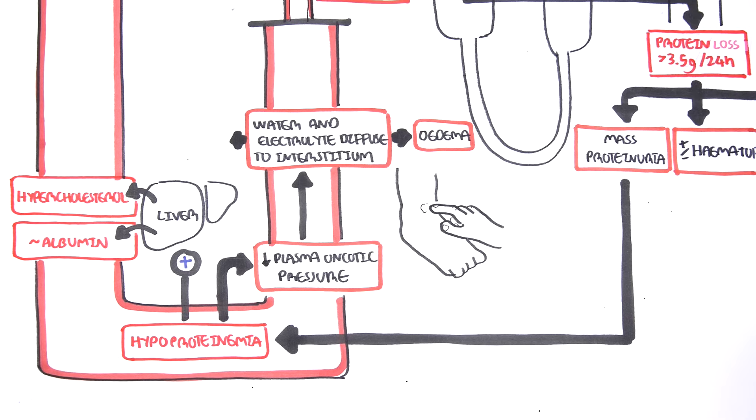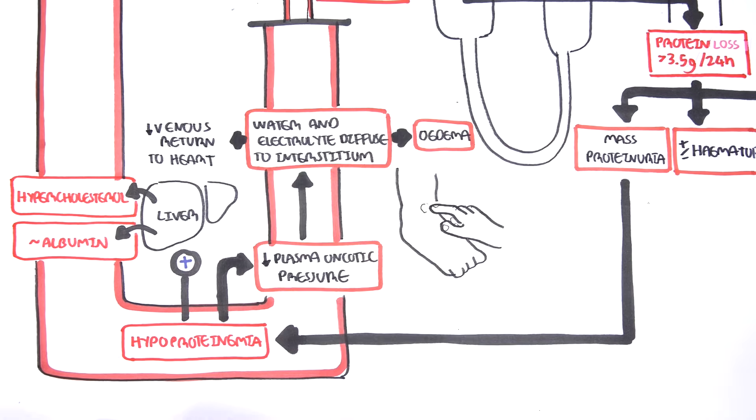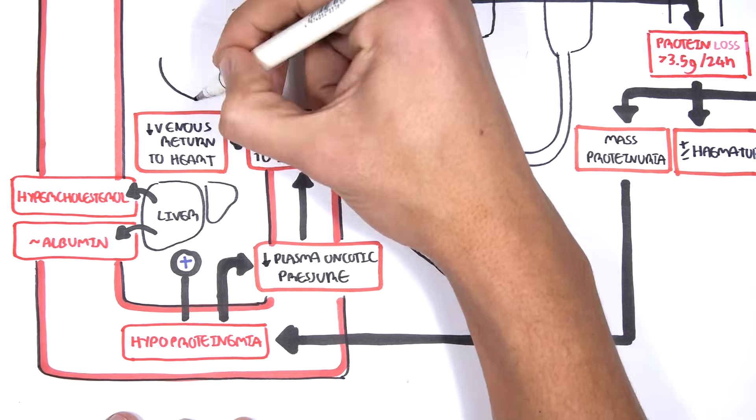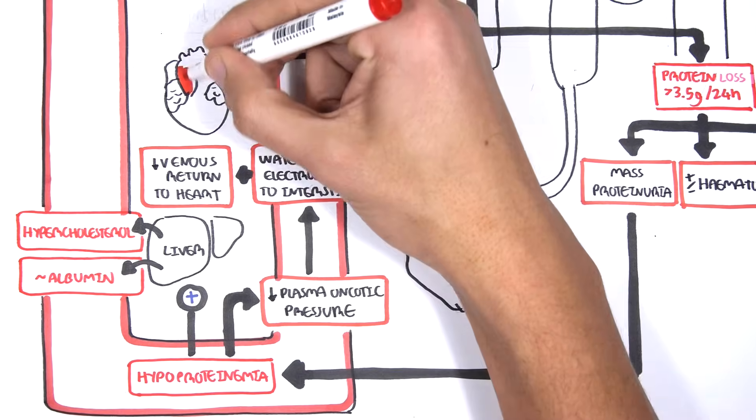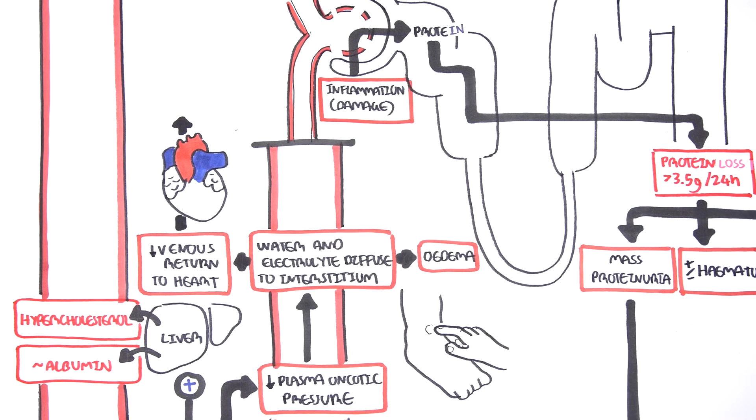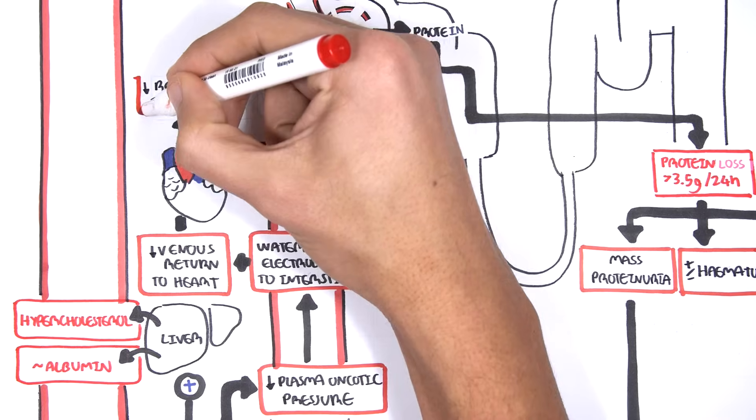The movement of water and electrolytes means there will be decreased volume in the vascular compartment and circulation. This decrease in volume means decreased venous return to the heart. With decreased blood volume returning to the heart, the heart will pump less volume to the rest of the body. This means there will be decreased renal blood flow, which means decreased GFR.